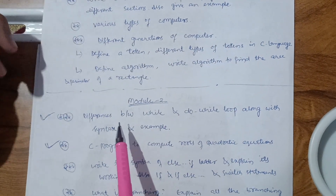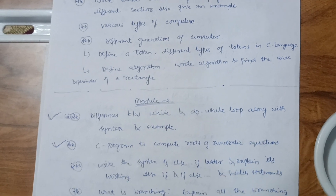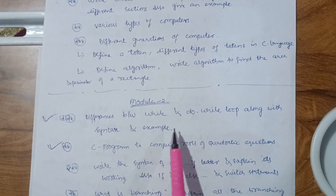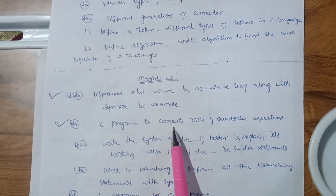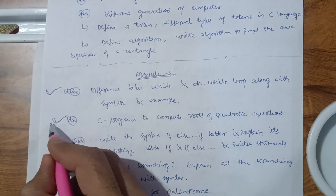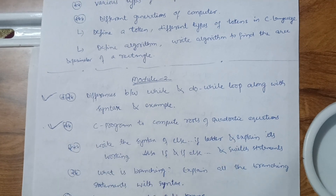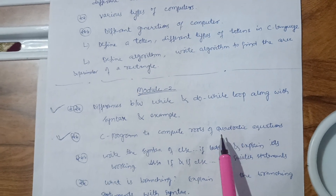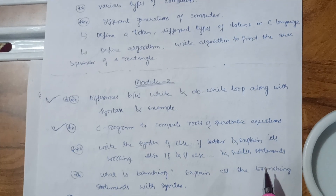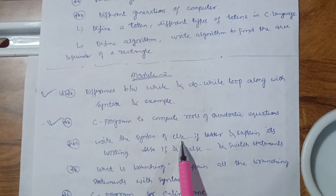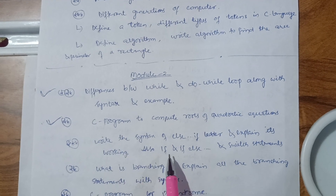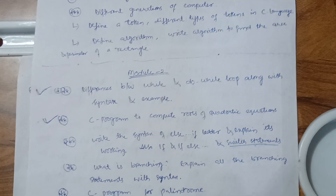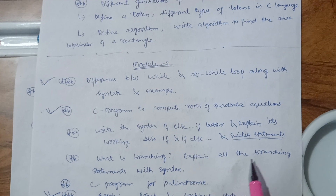Then Module 2 comes up. Focus on the differences between while and do-while loop along with syntax and example. Next, write a C program to compute roots of quadratic equations — this is the most important, super important question for Module 2. Also focus on the syntax of else-if ladder and its working, if and if-else statements, and switch statements.